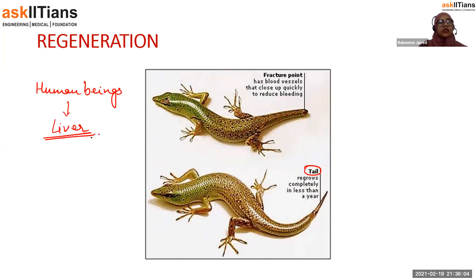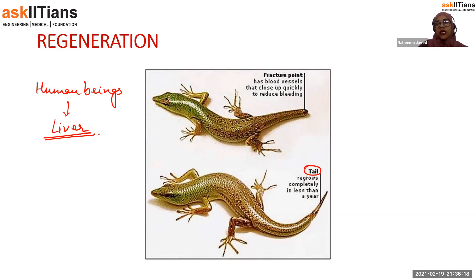In human beings also, there is an organ capable of regeneration, and that organ is the liver. Livers are therefore the easiest organ to find when organ donation is required.